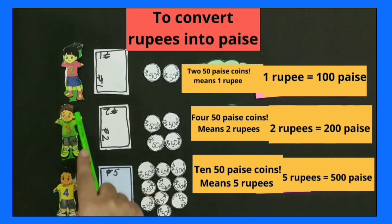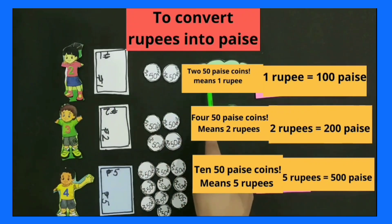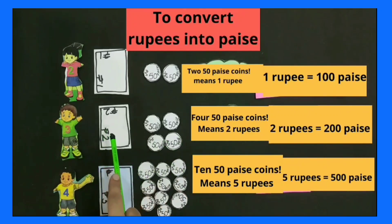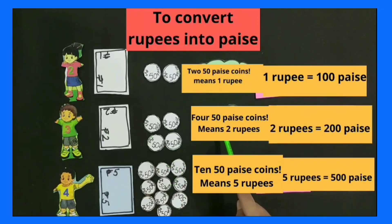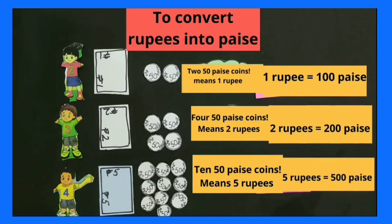Students, you saw that Simran got 2 coins of 50 paise, and 2 fifty-paise coins means 1 rupee, so 1 rupee is equal to 100 paise. Sandeep got 4 coins of 50 paise, and 4 fifty-paise coins means 2 rupees, so 2 rupees is equal to 200 paise. Mandeep got 10 coins of 50 paise, and 10 fifty-paise coins means 5 rupees, so 5 rupees is equal to 500 paise.